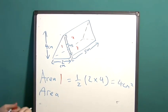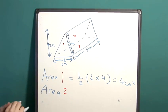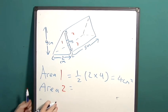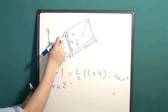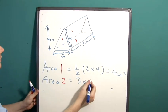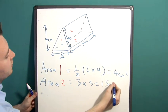The area of two is three multiplied by five because it's a rectangle, which is fifteen centimetres squared.